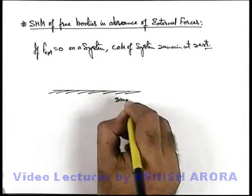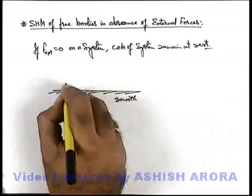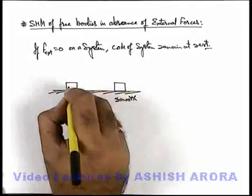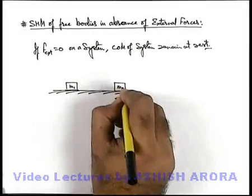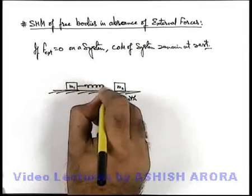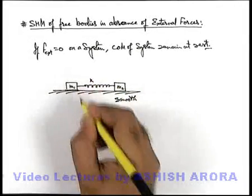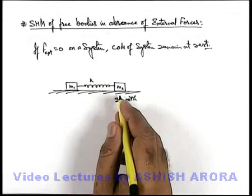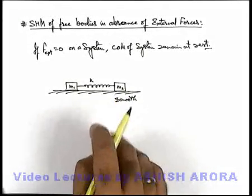On a smooth surface, two blocks of masses m1 and m2 are placed and connected by a spring having a constant k, and the whole system is at rest and no external force is acting on it.